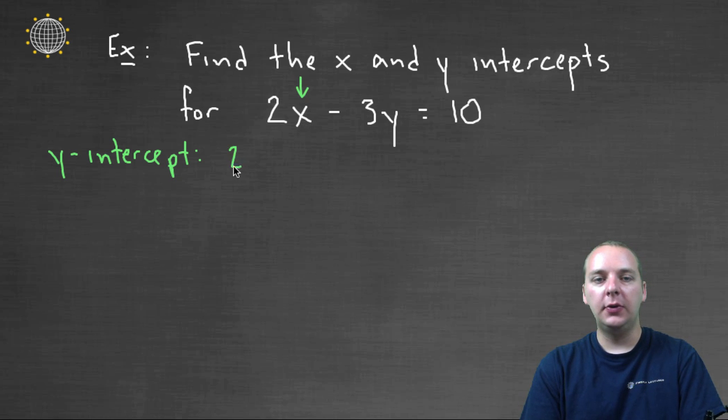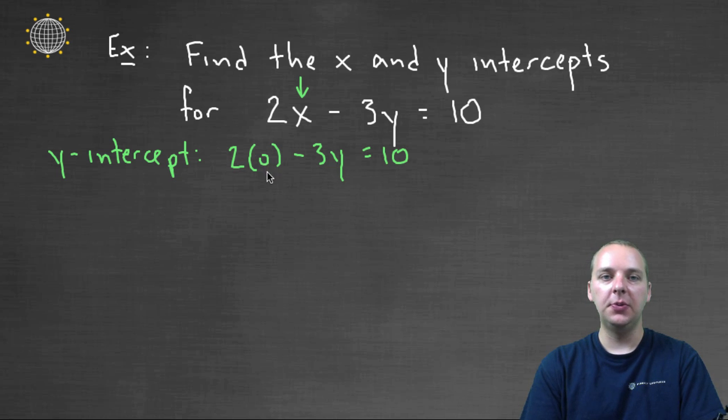So we'll have two times zero, minus three times y, equals ten. And we're going to find the y that makes this equation be true. So two times zero is zero. Zero minus three y is negative three y, equals ten. We'll solve for y by dividing both sides by negative three.